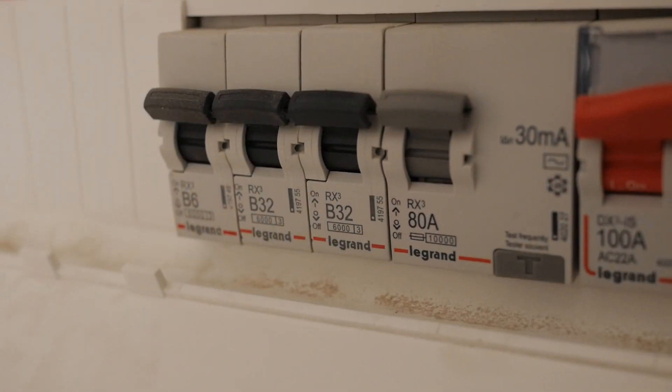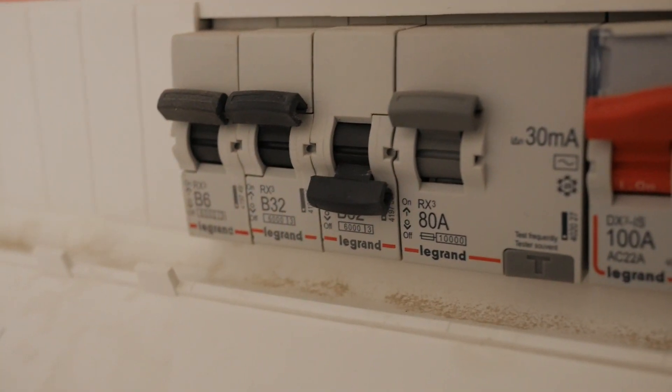Once you're happy that the socket is wired correctly, the next thing you need to do is to turn the circuit off that powers the socket itself. So go to your fuse board, find the relevant circuit, and then turn the power off to the socket. Do make sure that when you're working that no one turns the power back on.